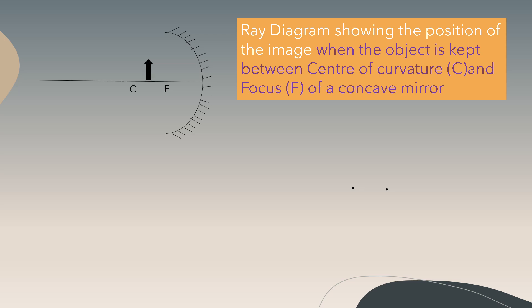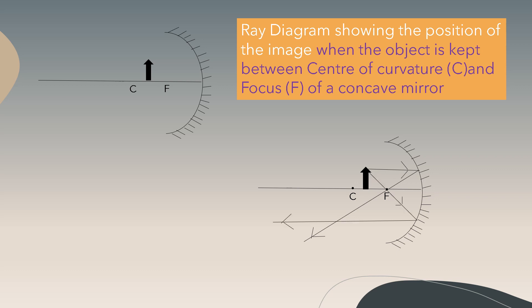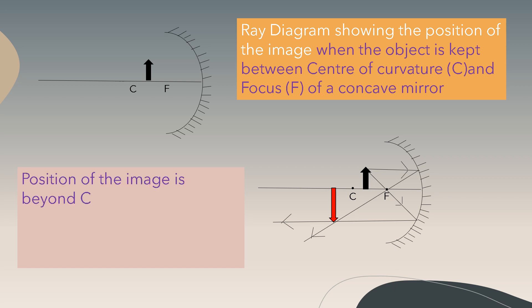Now the ray diagram when the object is placed between the center of curvature and the focus of the concave mirror: the first ray, parallel to the principal axis, passes through the focus. The ray passing through the focus becomes parallel to the principal axis. At the point of intersection we have the image. The position of the image is beyond C, and the characteristics of the image are real, inverted, and magnified.